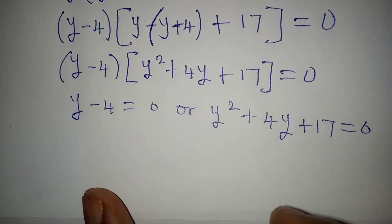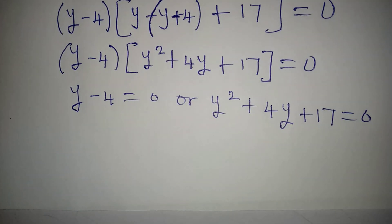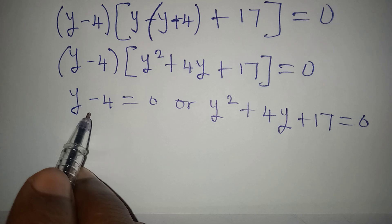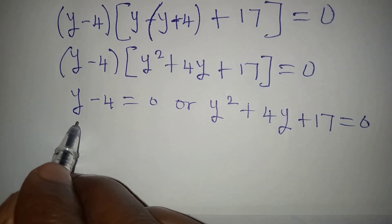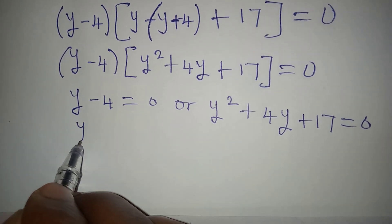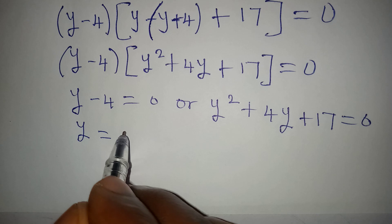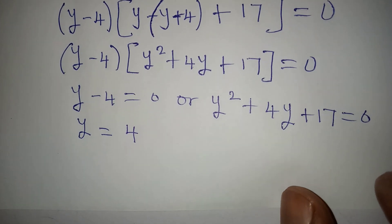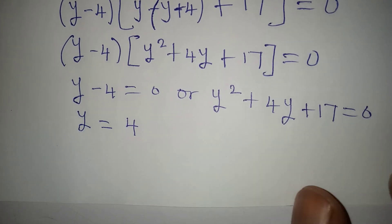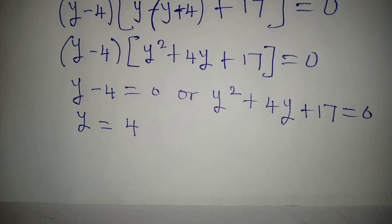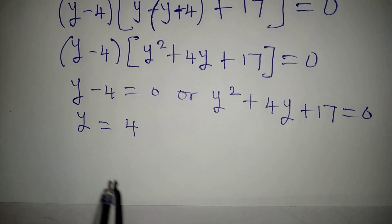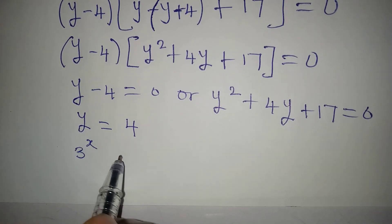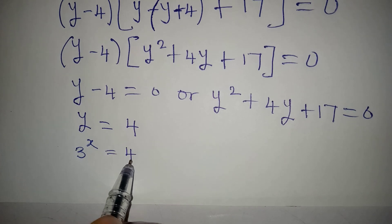From y minus 4 equals 0, we get y equal to 4. And since y equals 3 to the power of x, we have 3 to the power of x equal to 4.